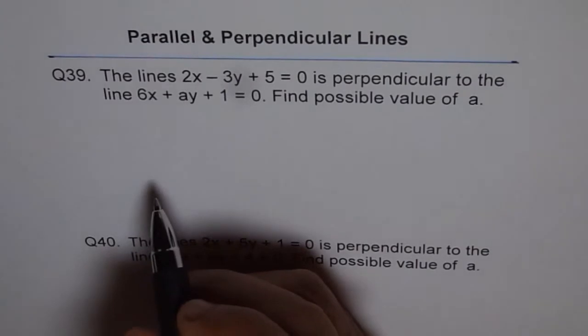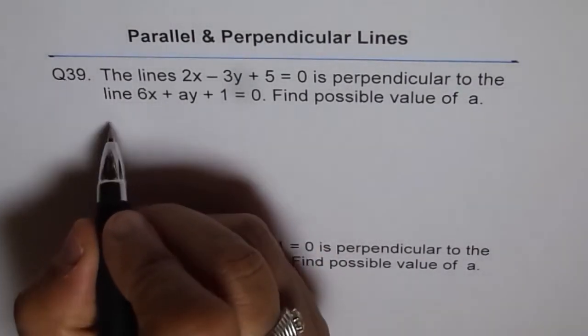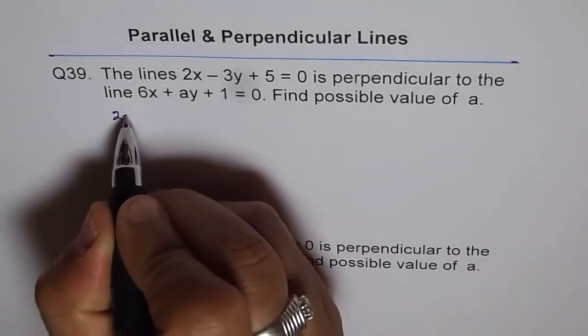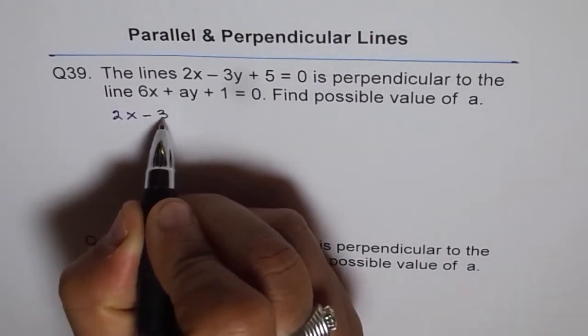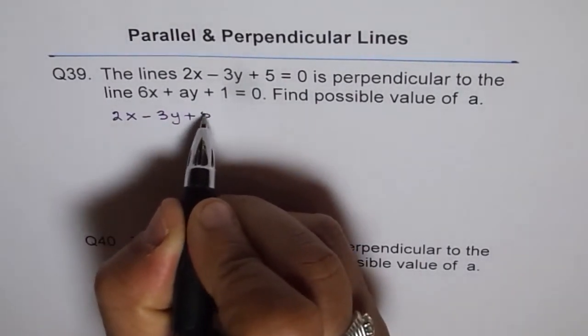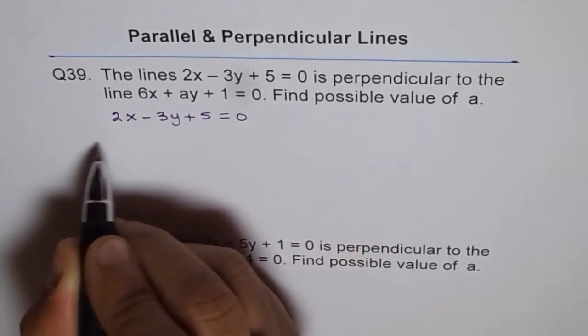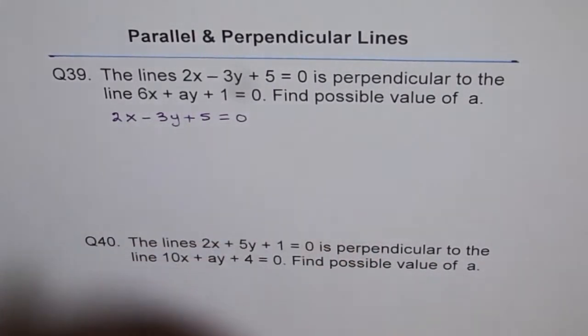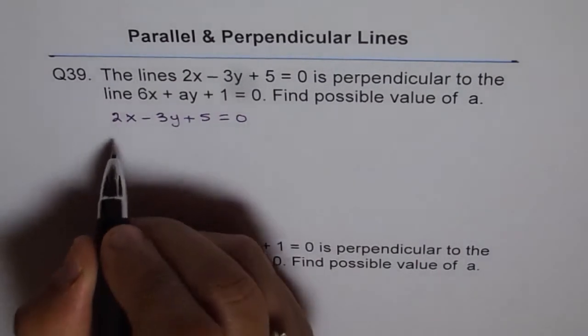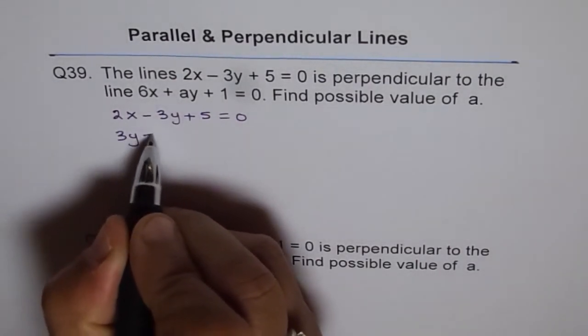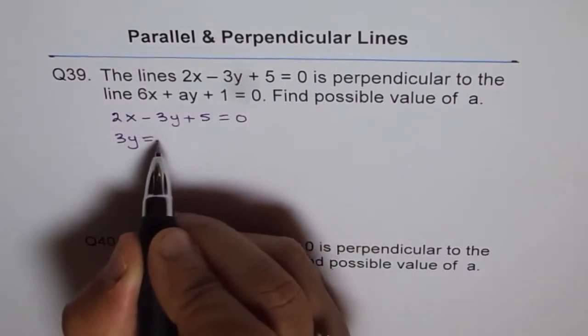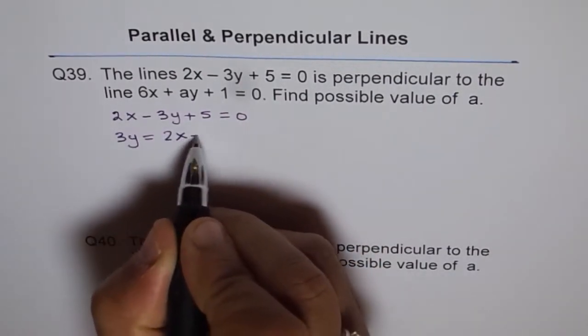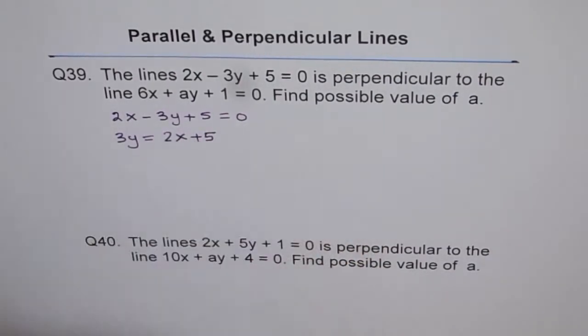That is what we will do. Let's write down the equation and then write them in y equals mx plus b form. The first equation is 2x minus 3y equals to 5. We can write this as 3y, taking 3y to the other side, so 3y equals 2x plus 5.